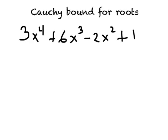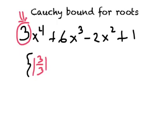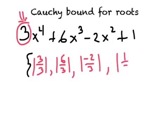The way that you want to start this problem is we want to construct this set where we take all of the coefficients divided by the leading coefficient. This is the leading coefficient 3. So we take the absolute value. So here we're going to get 3 divided by 3 absolute value, that's going to give us 1. We're going to get the absolute value of 6 over 3 which is 2. We're going to get the absolute value of minus 2 over 3 which is just 2 thirds. And we're going to get the absolute value of 1 third.